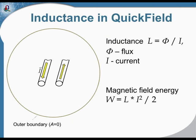Inductance is a coefficient between flux and current, and there are many ways to use different formulas for inductance calculations. In QuickField we use two approaches: one divides the flux by the current, and an alternative approach uses the formula for magnetic energy. Both formulas should in theory bring the same values of inductance, but in different practical cases it is sometimes more convenient to use the first or second formula.